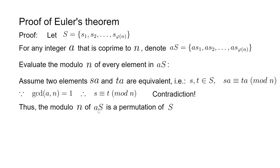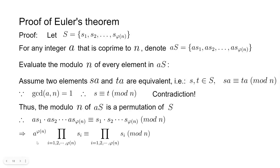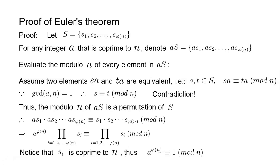Now we multiply all elements on both sides. We get (a·s₁)(a·s₂)···(a·s_φ(n)) ≡ s₁·s₂···s_φ(n) (mod n). After simplification, this gives a^φ(n) times the product of all sᵢ ≡ product of all sᵢ (mod n). Since each sᵢ is coprime to n, the product of all sᵢ is coprime to n, so we can cancel it from both sides. We finally get a^φ(n) ≡ 1 (mod n).